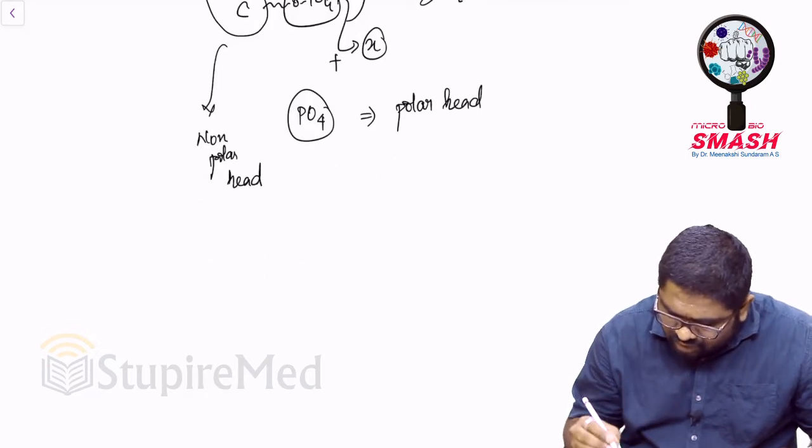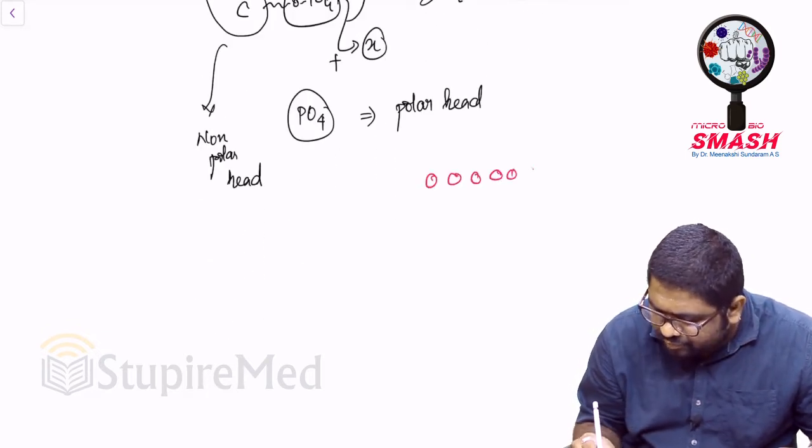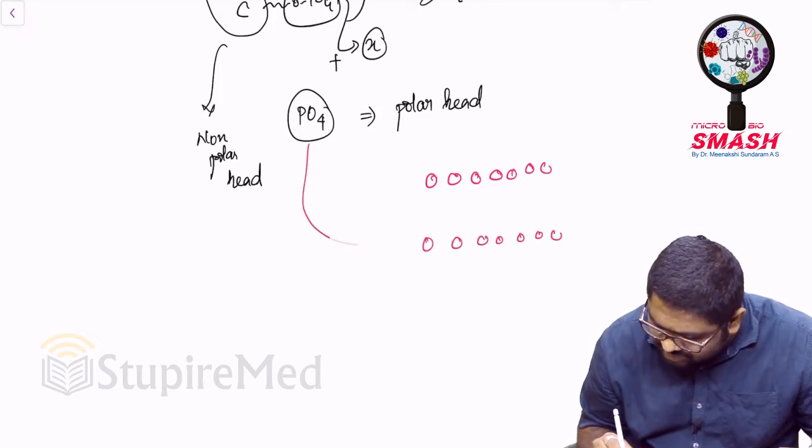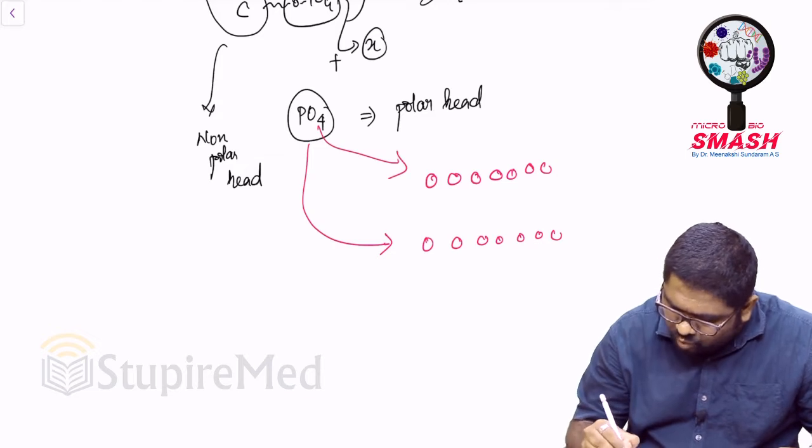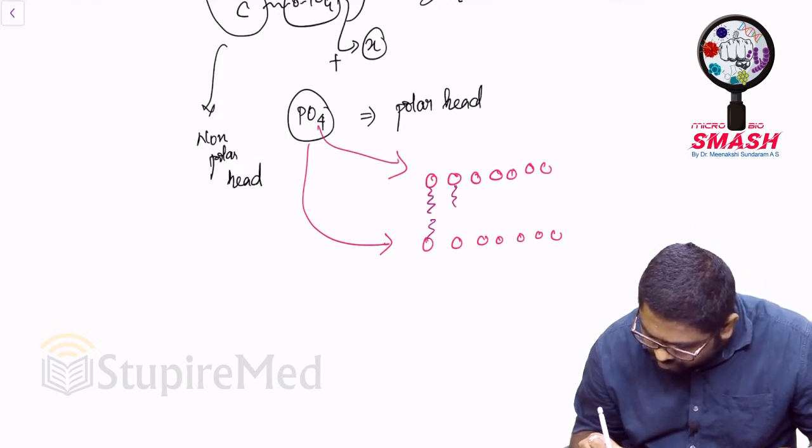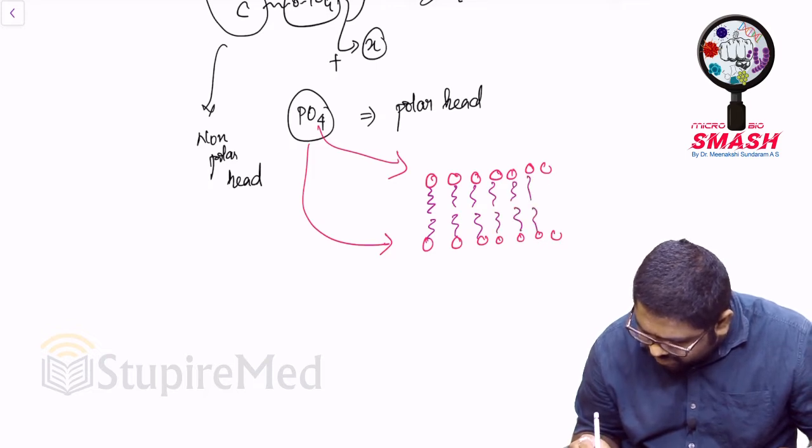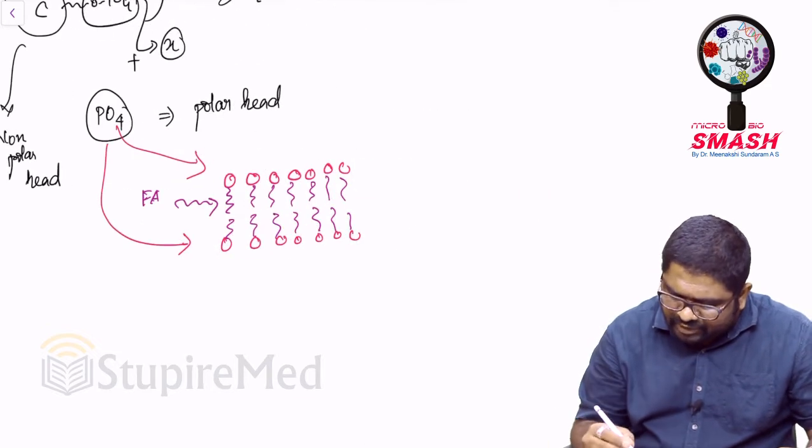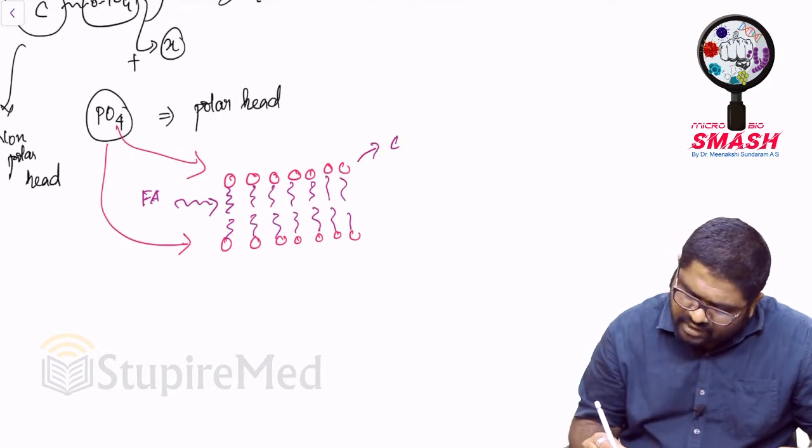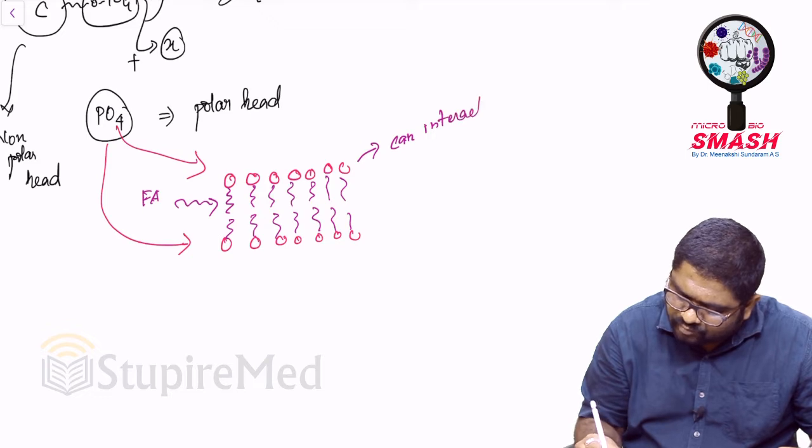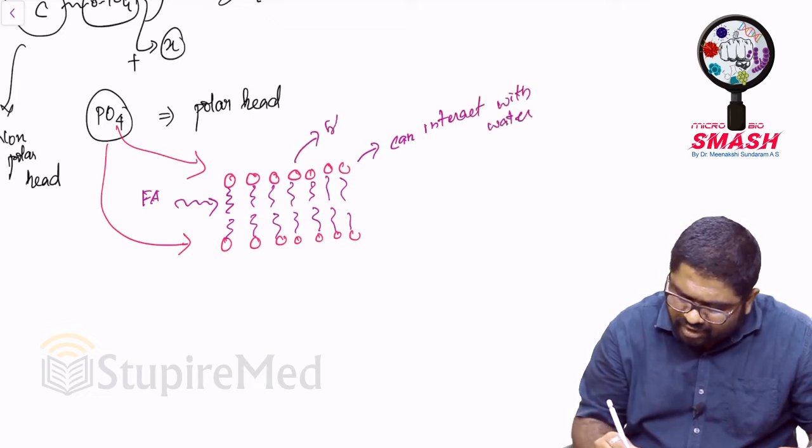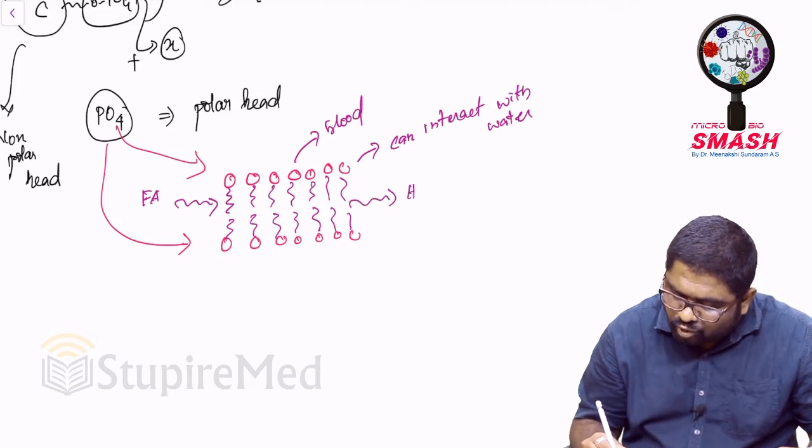When I drew the lipid bilayer for you, you will have the heads called as phosphates going in here while the fatty acids bound to the glycerol are the ones who are capable of making a tail here. So the polar head can interact with water and blood, but these are hydrophobic pockets.